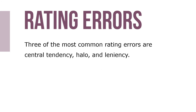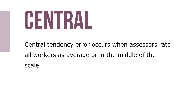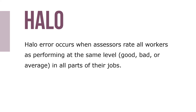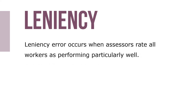Workers often have strong doubts about the accuracy of their performance appraisals — and they might be right. Assessors are prone to errors while rating worker performance. Three of the most common rating errors are central tendency, halo, and leniency. Central tendency error occurs when assessors rate all workers as average or in the middle of the scale. Halo error occurs when assessors rate all workers as performing at the same level — good, bad, or average — in all parts of their jobs. Leniency error occurs when assessors rate all workers as performing particularly well.